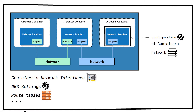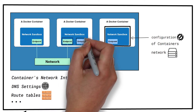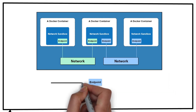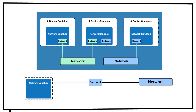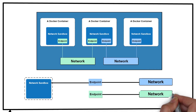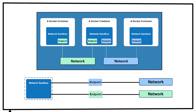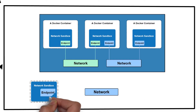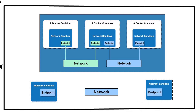A sandbox may contain many endpoints from multiple networks. An endpoint joins a sandbox to a network. An endpoint can belong to only one network and it can belong to only one sandbox if it is connected. A network is formed by a group of endpoints that are able to communicate with each other directly.